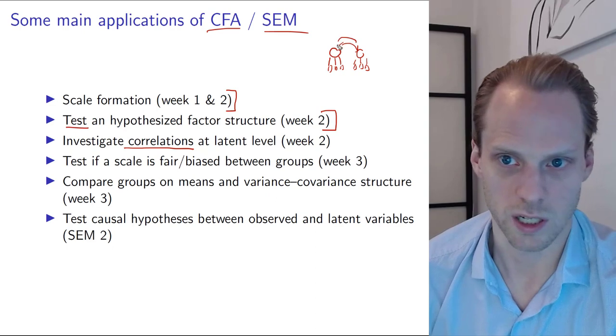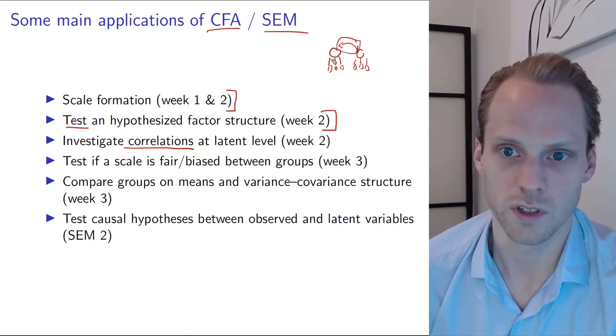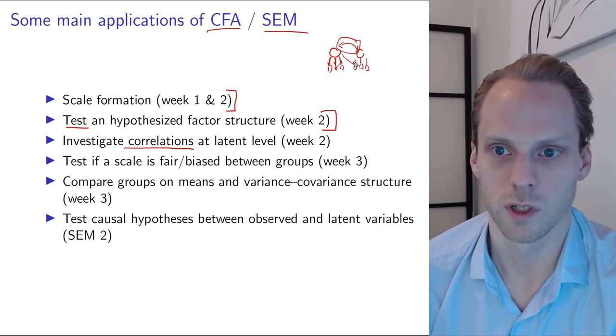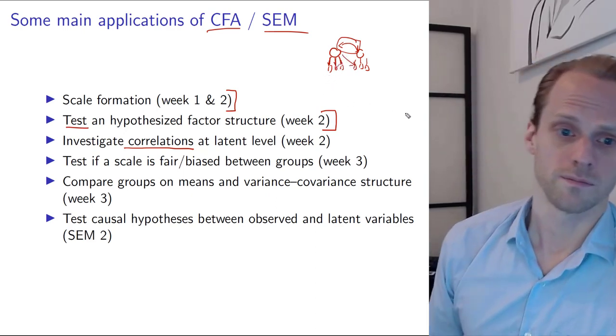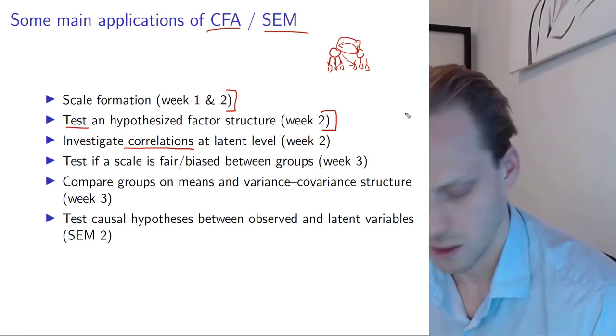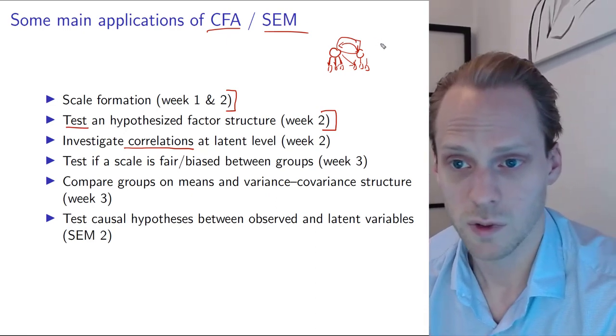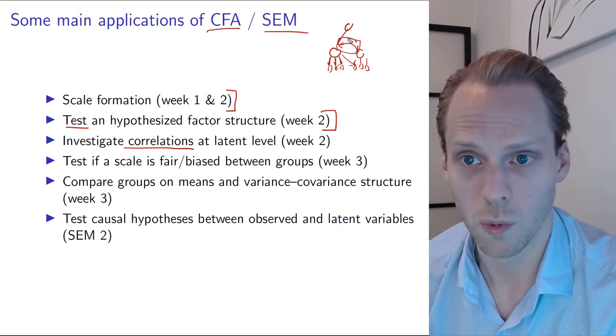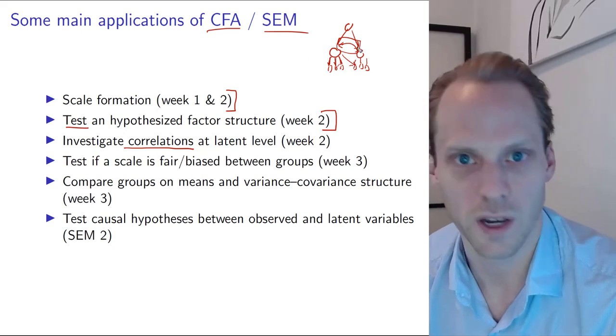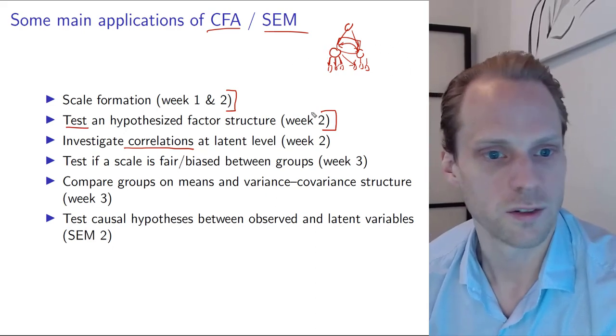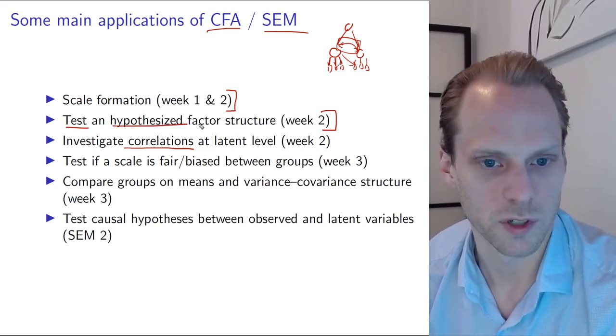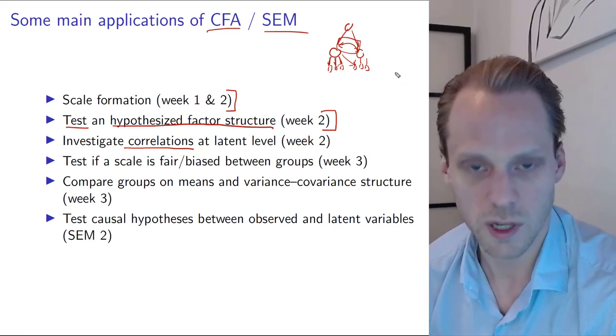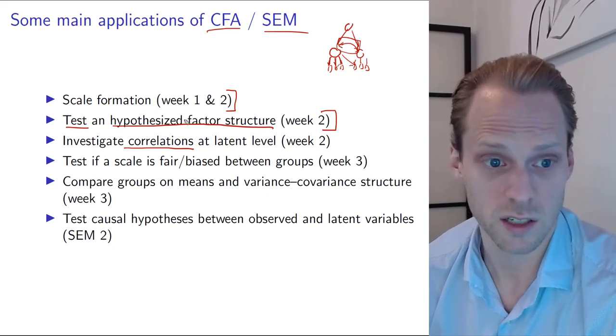But at least we try to reject the hypothesis that this model identifies data. We can test for the factor structure, which is nice. And we can also look at things like this correlation, or which of these items are good indicators, which are not. Maybe there's a cross-loading that might be interested, things like that. And that's very useful knowledge. And that's week two. And that's actually what you'll see many people do with CFA analysis. That's where they stop.